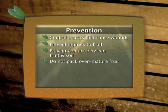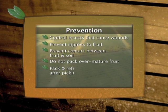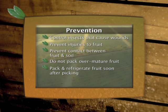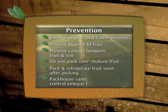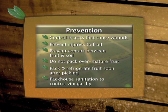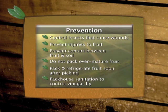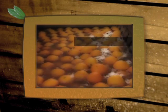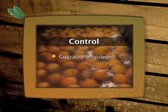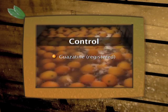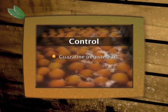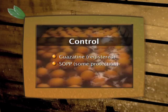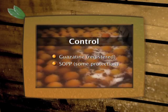Fruit must be picked before it becomes over mature, and it must be packed and refrigerated as soon as possible after picking. Packhouse sanitation is essential to prevent vinegar flies, which are attracted to sour rot, from spreading the disease. Wisatine is the only fungicide that is registered for the control of sour rot, but SOPP also provides some protection.